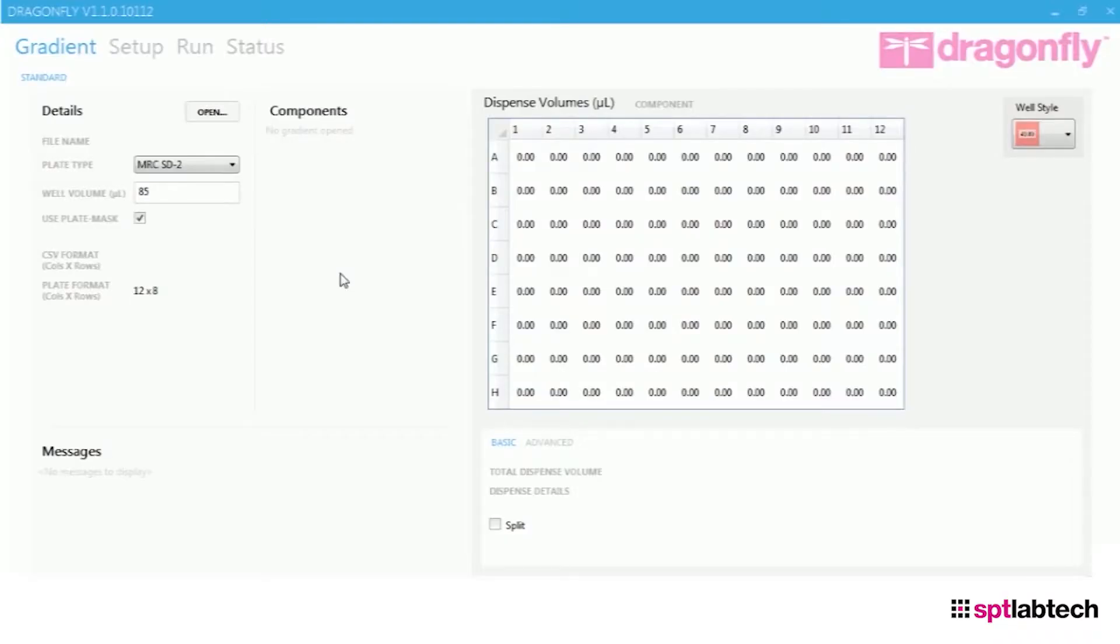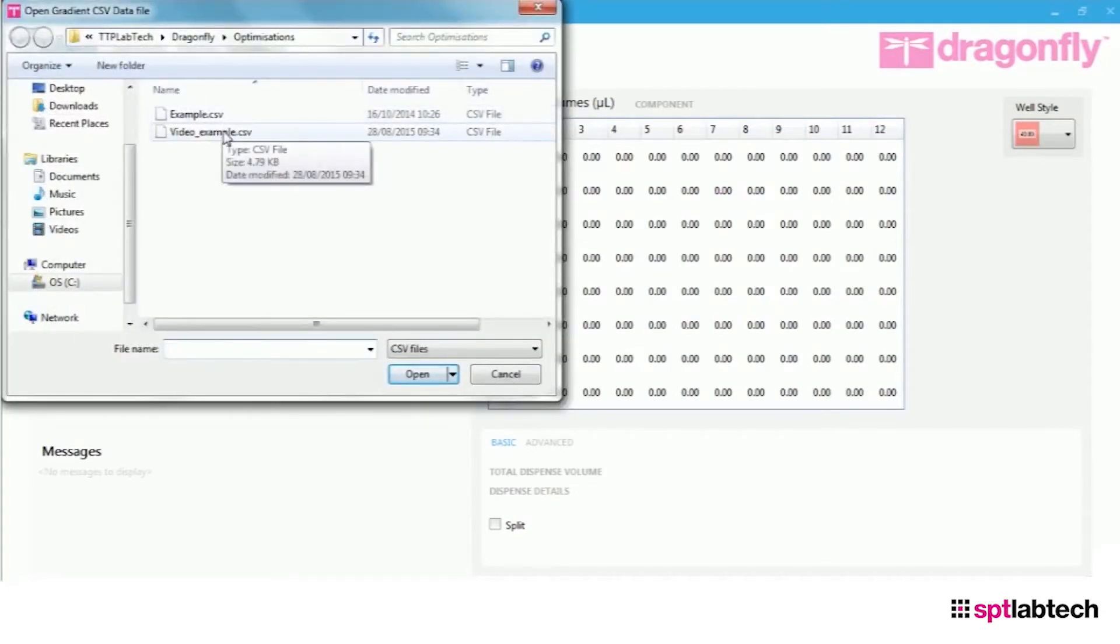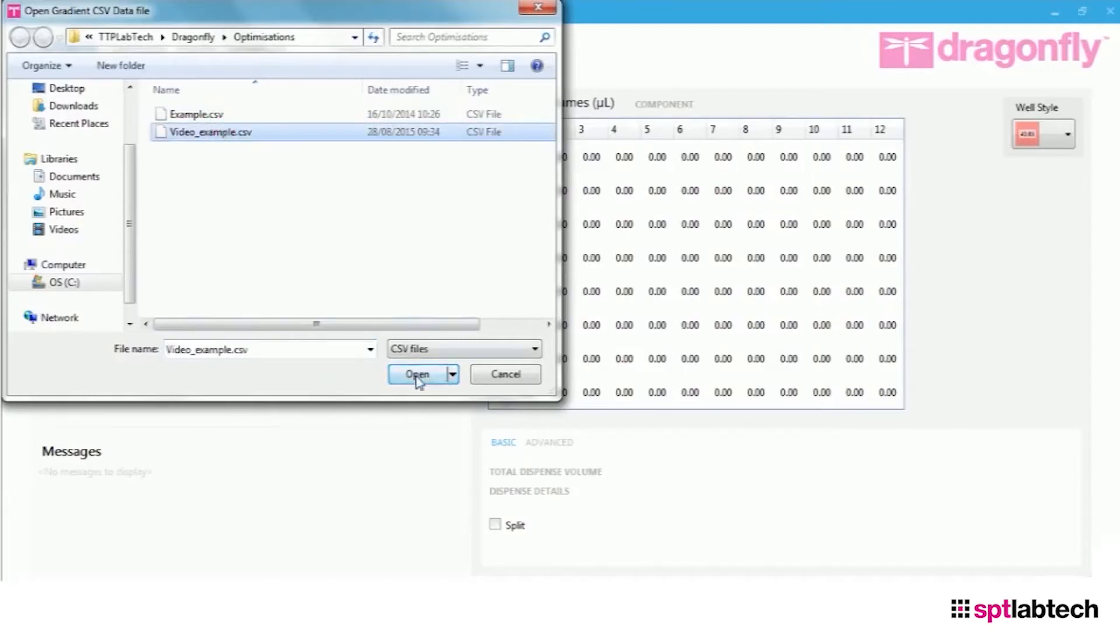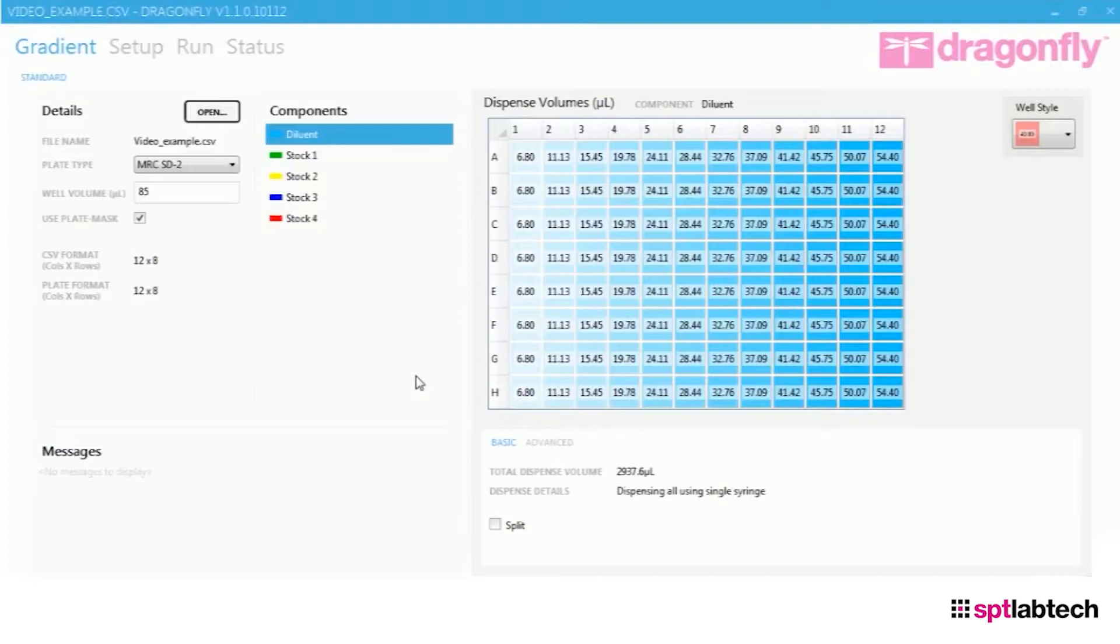The first thing we need to do is go to the open tab at the top so we can read in our file from the Dragonfly designer software. It's a CSV file. Simply click on that and open. This reads in the stocks that we require and also the volumes to be dispensed.